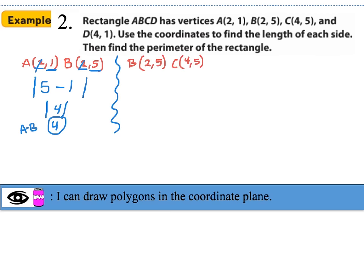Now let's find the distance from point B (2,5) to point C (4,5). The y-coordinates are both 5, so we ignore those and find the absolute value difference of the x-coordinates: |4 − 2| = 2. The distance from B to C is 2.